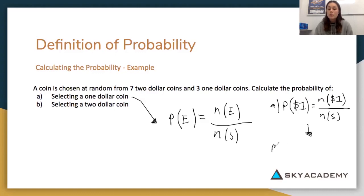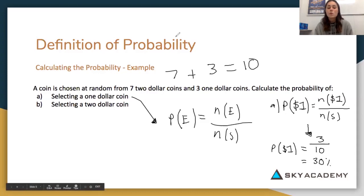So if we have a look at our first question, question A, it says selecting a one dollar coin. The probability of selecting one dollar equals the number of one dollar coins, which is three, over the sample space. The sample space is all the possible outcomes. So we have seven outcomes of getting a two dollar coin plus three outcomes of one dollar coin. That's ten possible outcomes. So it's three on ten, which equals 0.3 or 30%.